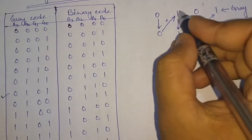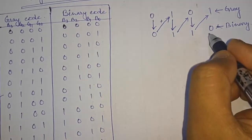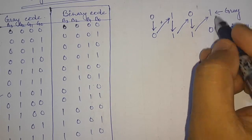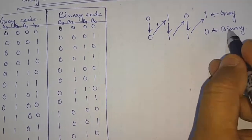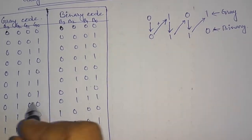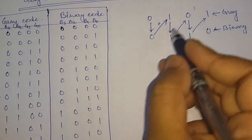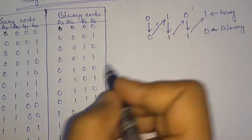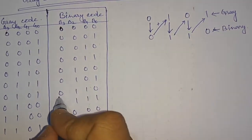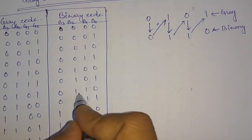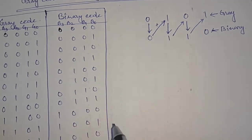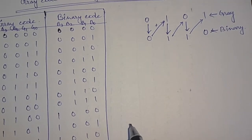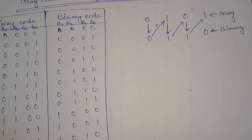So this is the gray code and here we got the binary converted code. Let us check from the truth table: gray code 1 0 1 0 gives binary 0 1 0 1. Now let us consider another gray code: 1 1 1 0.